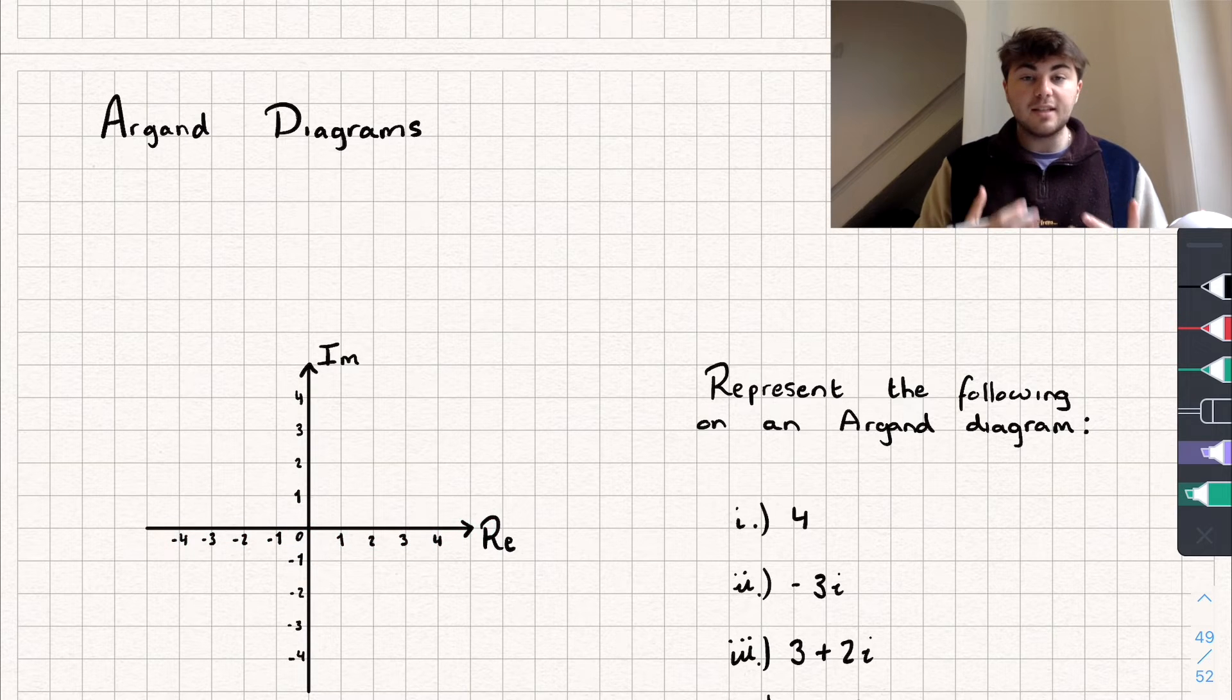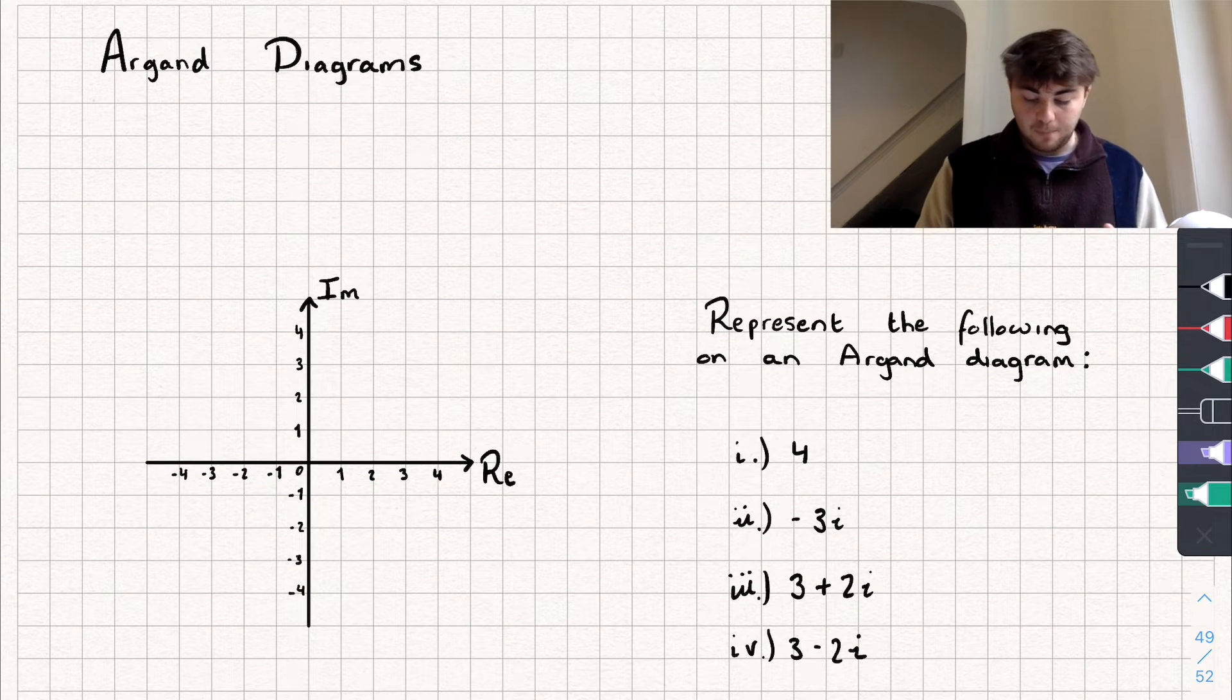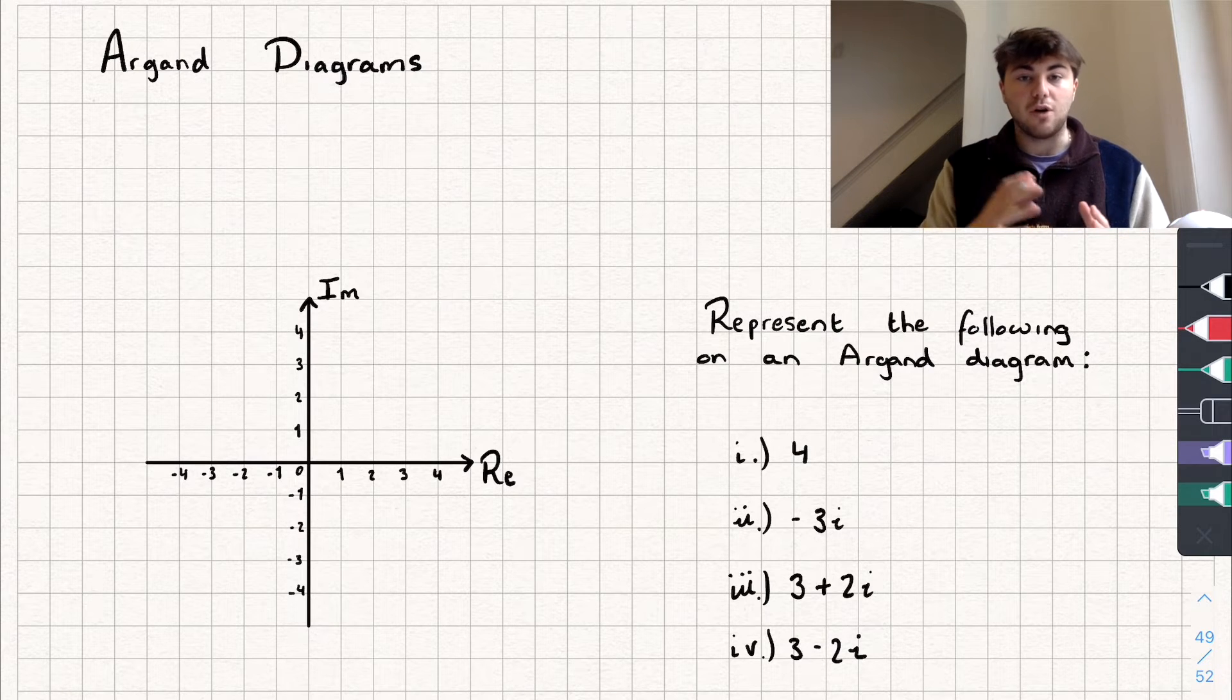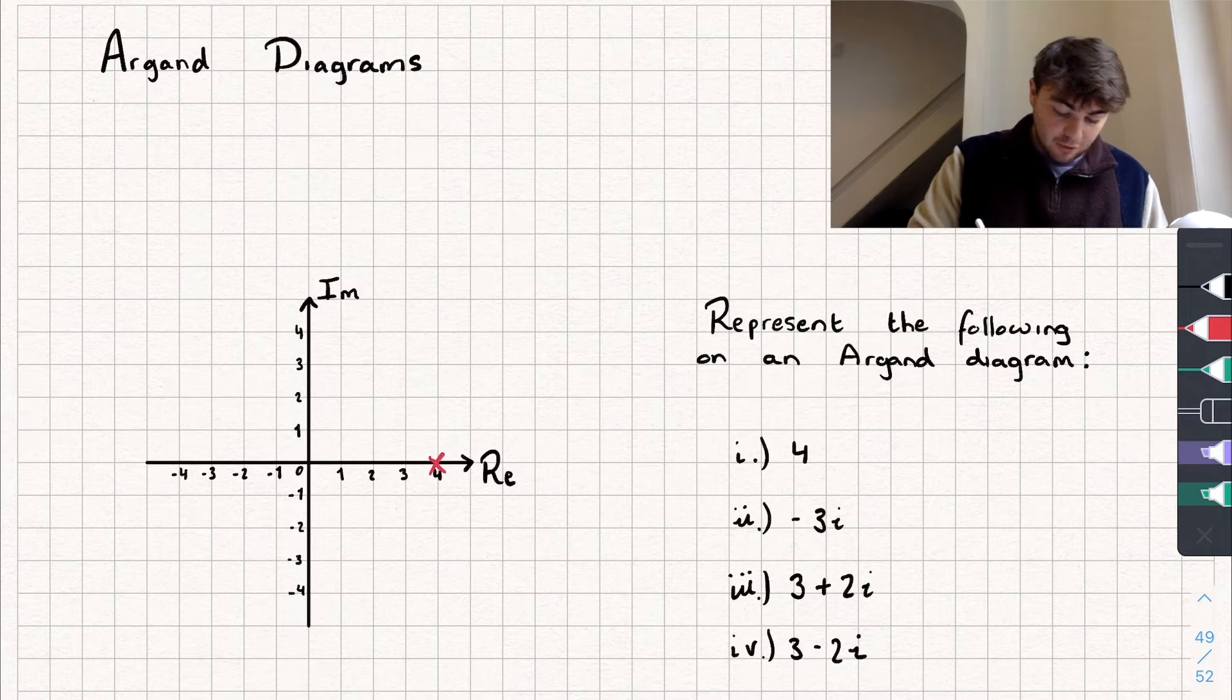And so let's see how we can represent numbers on the Argand Diagram. First we'll represent the number 4. Well, 4 is a real number, so it's going to be on our real axis, here at the point 4.